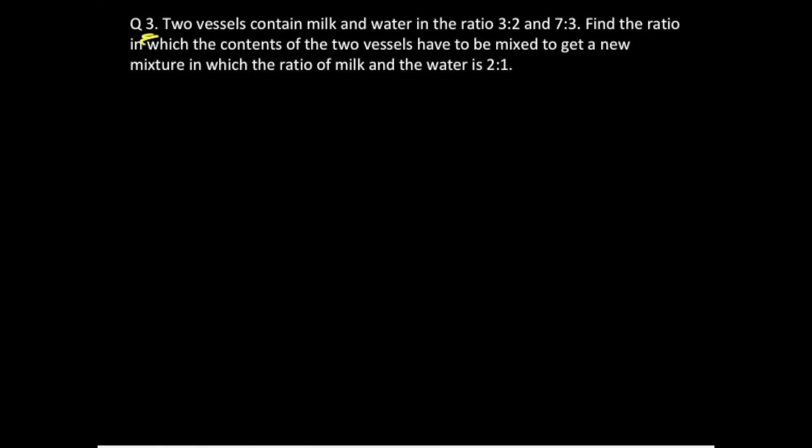In question number 3, two vessels contain milk and water in the ratio 3:2 and 7:3. Find the ratio in which the contents of two vessels have to be mixed to get a new mixture.